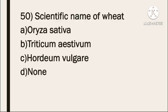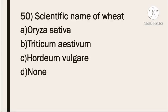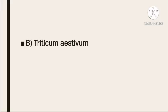Next question: scientific name of wheat — Option A: Oryza sativa. Option B: Triticum aestivum. Option C: Hordeum vulgare. Option D: none. The correct answer is Triticum aestivum — that is the scientific name of wheat. Thank you.